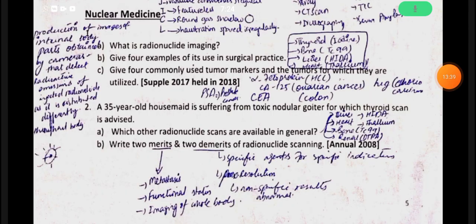The next chapter is not important; this is the extent of nuclear medicine. For UQ: radionuclide imaging is the production of images of internal body parts obtained by cameras that detect radioactive emissions of injected radionuclides as they distribute throughout the body. Radioactive material is given by injection, swallowing, or inhalation. Examples: HIDA scan for hepatobiliary tree, thallium for myocardium, technetium for bone scan, iodine for thyroid, DTPA for renal scan.